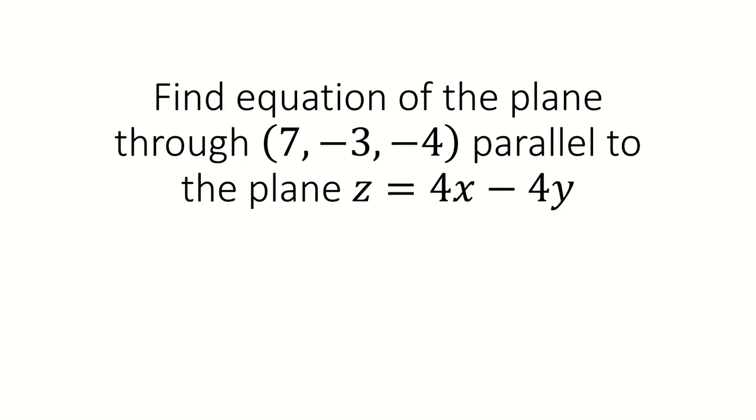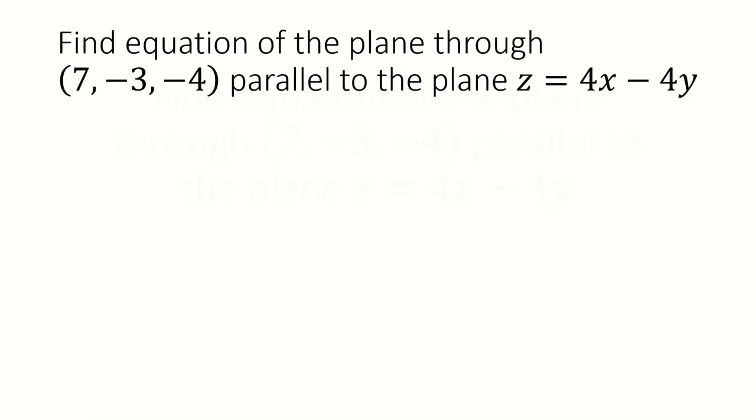Find the equation of the plane through the point (7, -3, -4) parallel to the plane z equals 4x minus 4y. Let's start off with z equals 4x minus 4y. We want to get the normal vector.